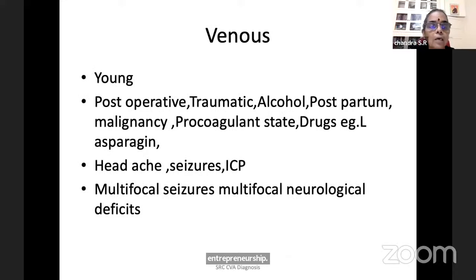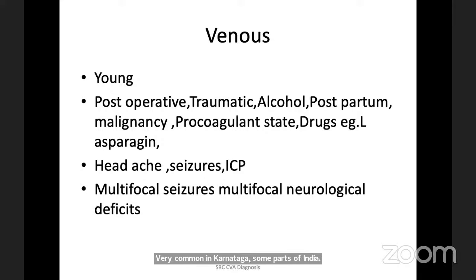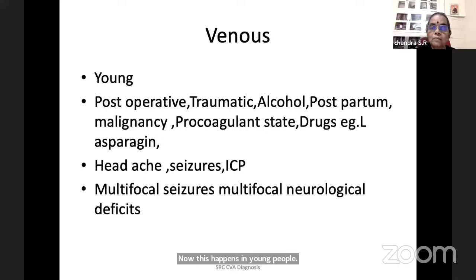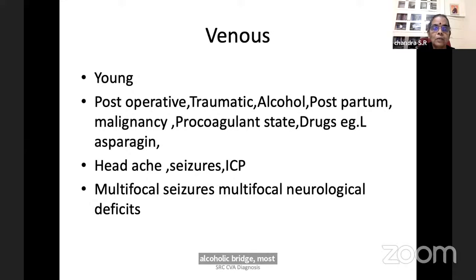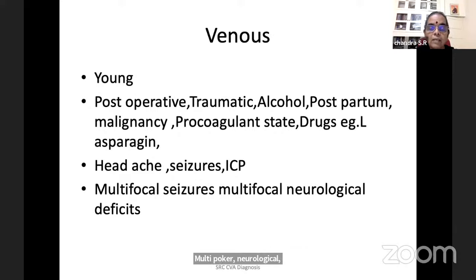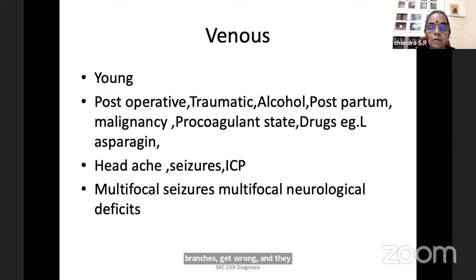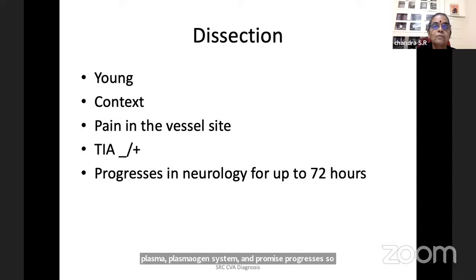Venous strokes are very common in Karnataka and some parts of India. This happens in young people — post-operative, post-traumatic, post-alcohol binge, post-partum, associated malignancy, procoagulant states, drugs like L-asparaginase. It presents with severe headache, seizures, raised intracranial pressure, and multifocal neurological deficits, because multiple branches get thrombosed and re-canalized due to the plasminogen system. Multifocal seizures, multifocal neurological deficit, severe ICP headache, and recurrent seizures are typical features of venous strokes.